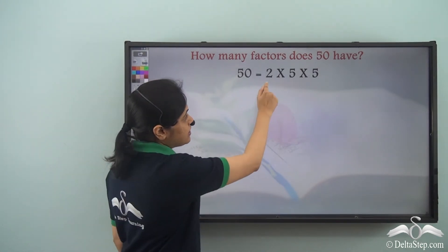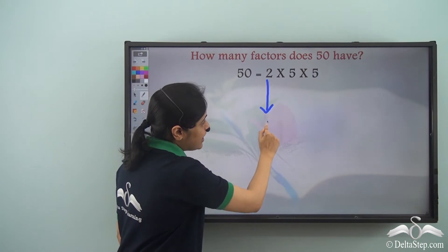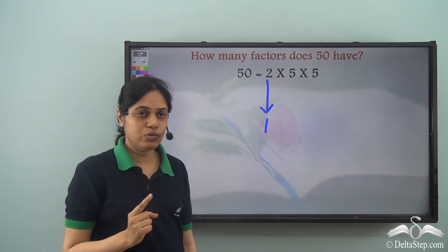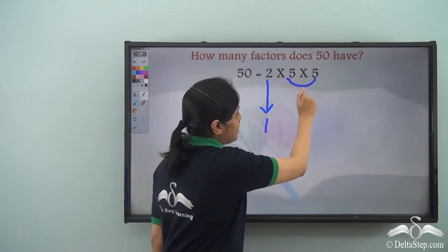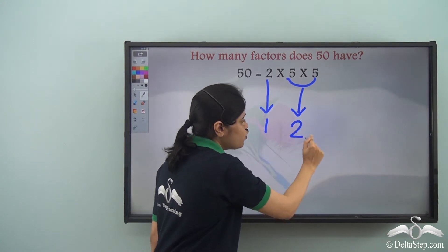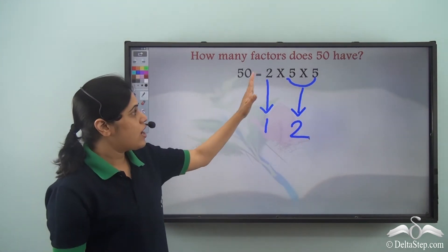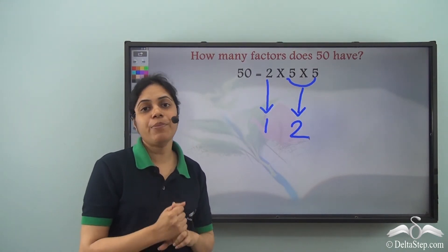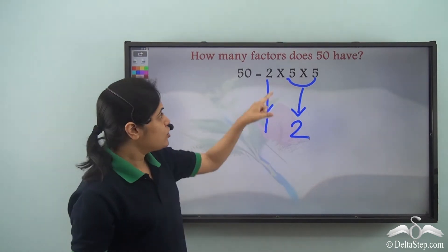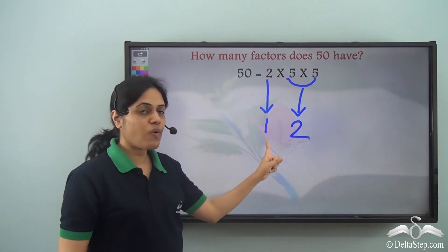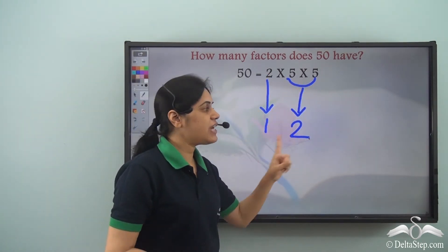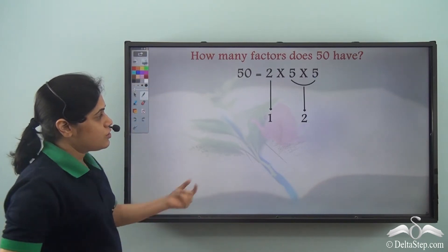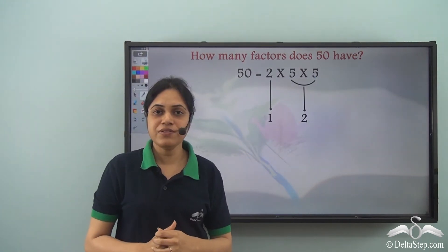Now using this I see that there is one 2 and there are two 5's. So I find out how many of each type of prime factors are there. So if I take 2 there is just one 2, and if I take 5 there are two 5's. So 1, 2 and two 5's.